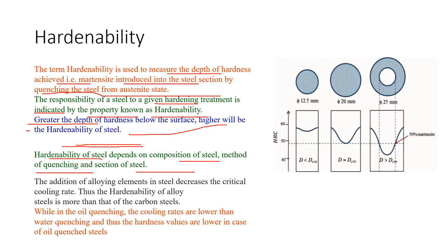The addition of alloying elements in steel decreases the critical cooling rate, thus the hardenability of alloy steels is more than that of carbon steels. In oil quenching, the cooling rates are lower than water quenching, and thus the hardness values are lower in case of oil quenched steels.